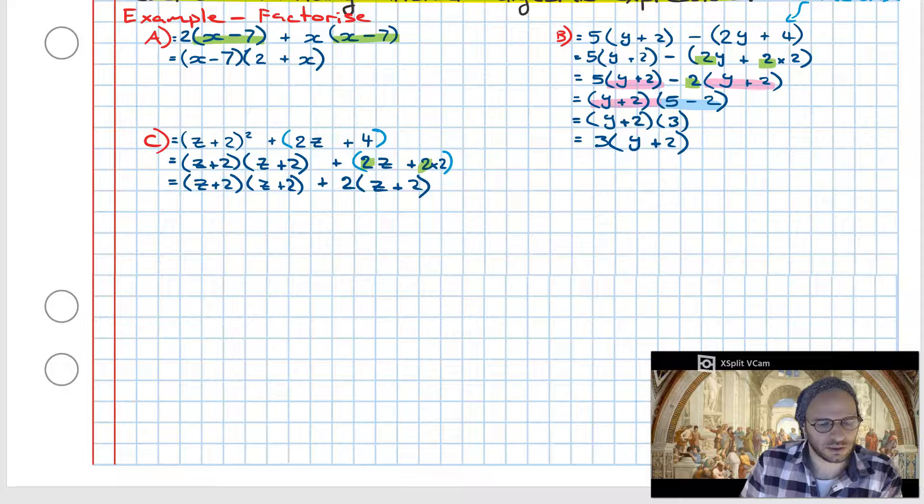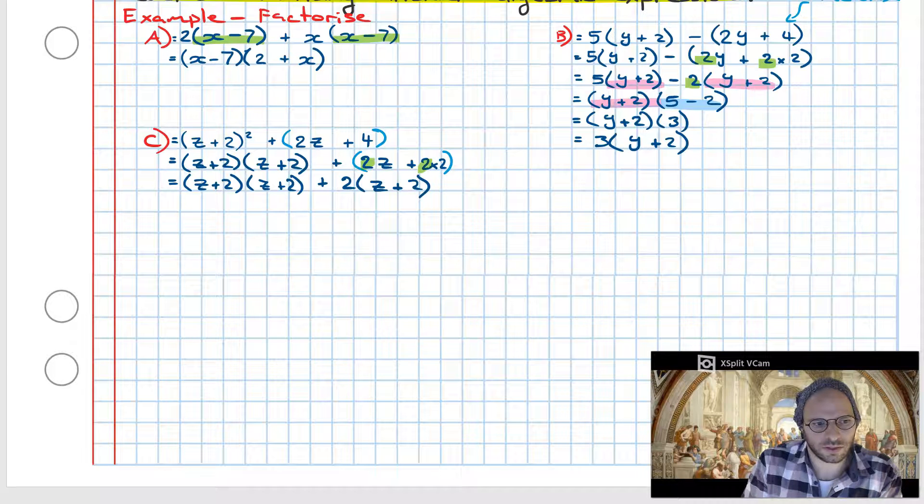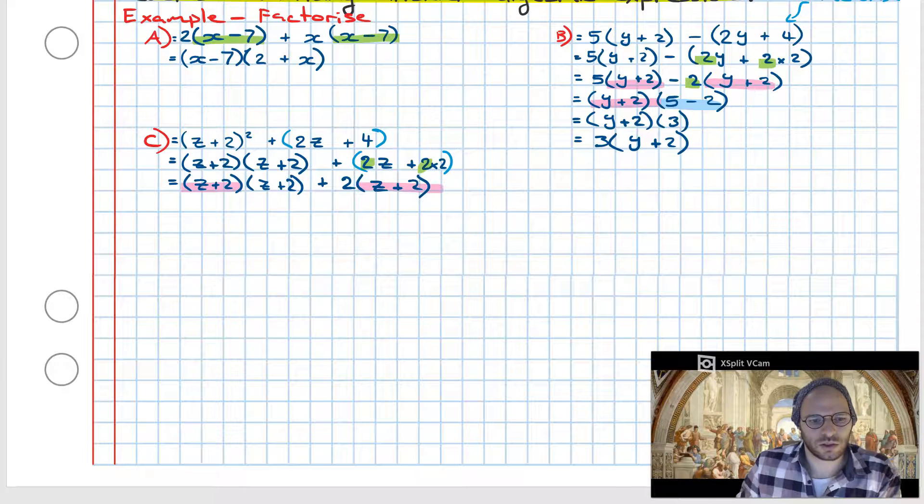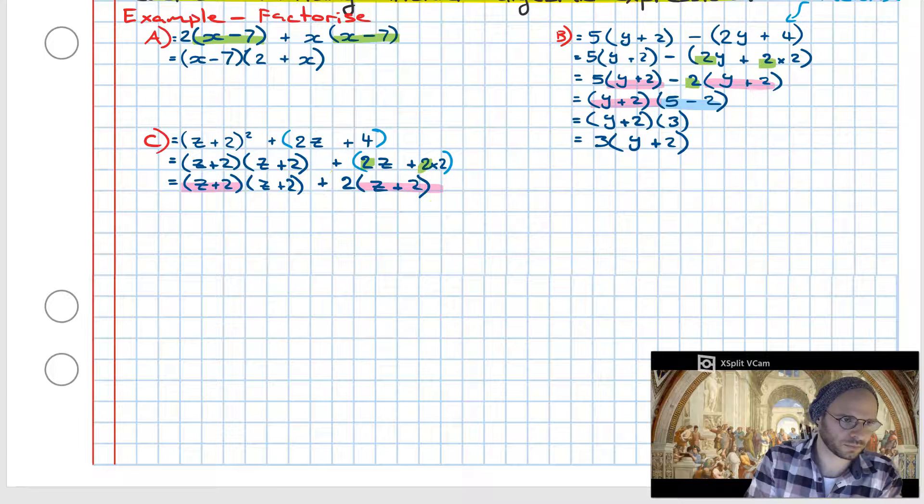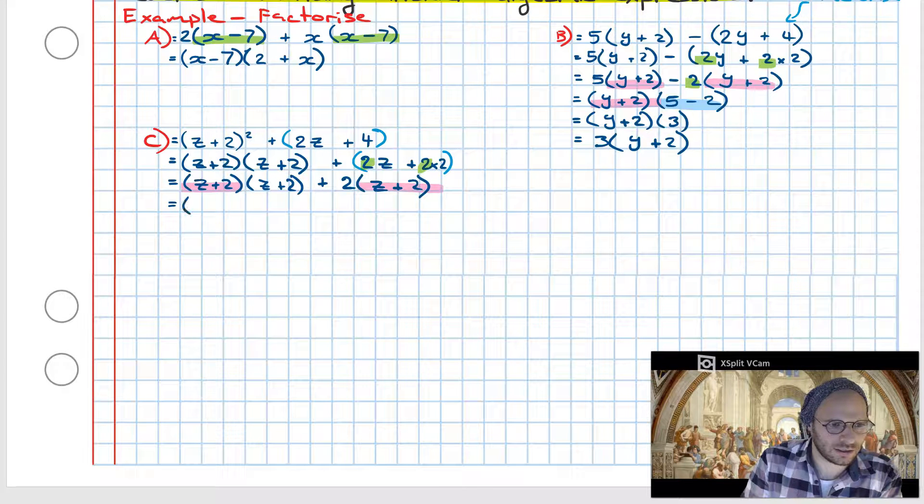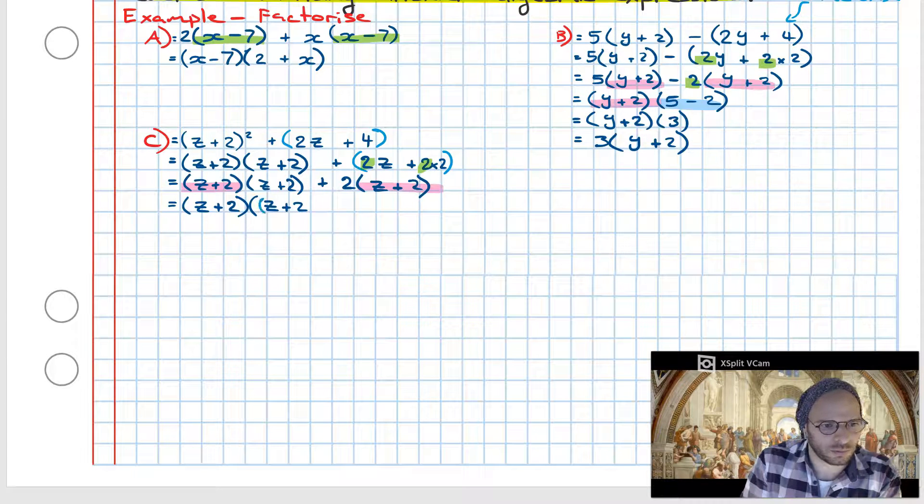Now second step is we have to have a look at what factors we have in common. In the first one we have a z plus 2 and in the second one we have a z plus 2 as well. Notice I'm only taking one z plus 2 from the first term and the reason for that is because if I take one here I'm only allowed to take one here. I only have a single one on the right so I can't take both on the left. So rewriting this out, our first factor is going to be z plus 2 and then what we leave behind is z plus 2 followed by a plus operation and a 2.